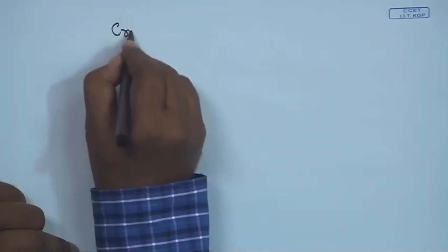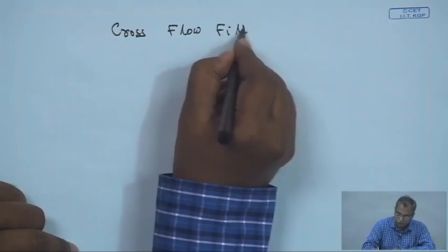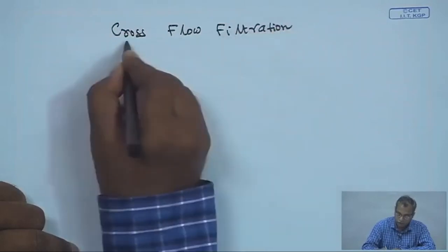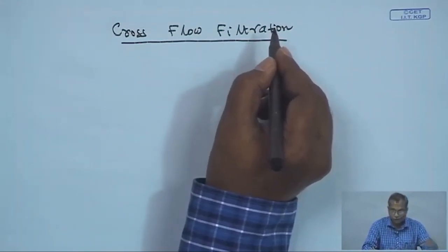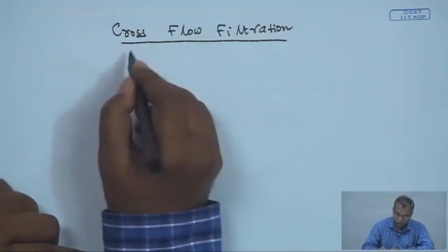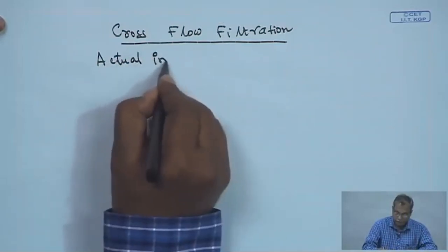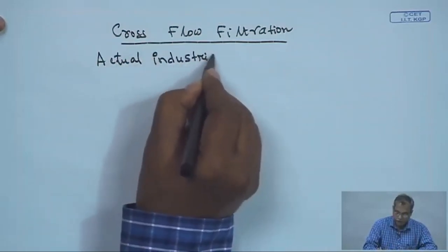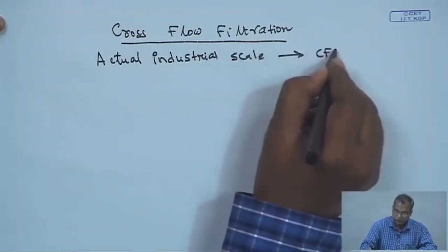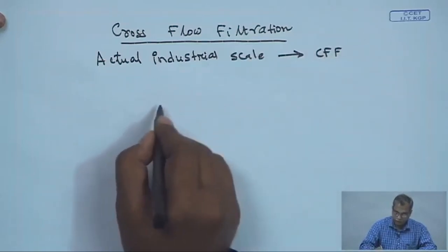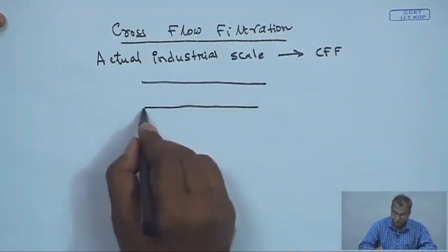Next we look at cross flow filtration. Cross flow filtration is a system generally used at actual industrial scale. It is called cross flow filtration because flow occurs through a channel with a membrane placed at the bottom surface.